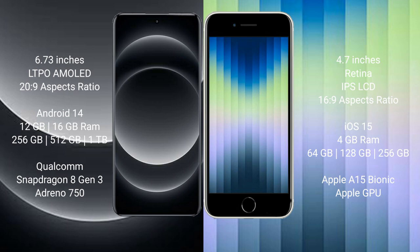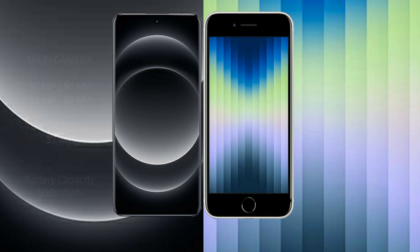The iPhone SE comes with 4GB RAM and 64GB, 128GB, or 256GB internal storage, powered by the Apple A15 Bionic processor with Apple GPU.